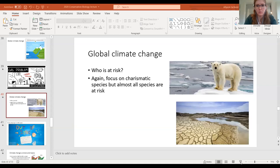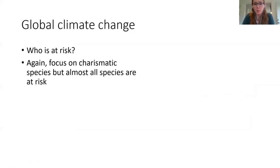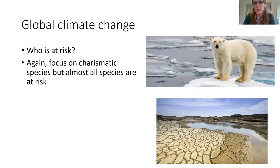Hopefully that's a review of climate change for you. Climate change is caused by increased carbon dioxide in the atmosphere, which comes from burning fossil fuels — burning oil, making electricity, all those things. In terms of global climate change, who is at risk? It seems like the poster children are often charismatic megafauna, but almost all species are at risk. We picture something like a polar bear, but even desert species are at risk because we're not just talking about melting sea ice — we're talking about increased droughts, increased fire, and all those things.